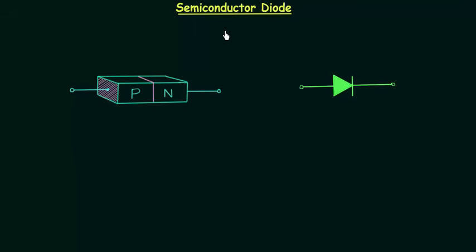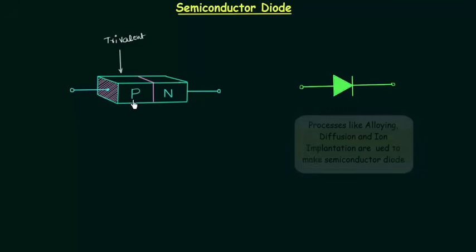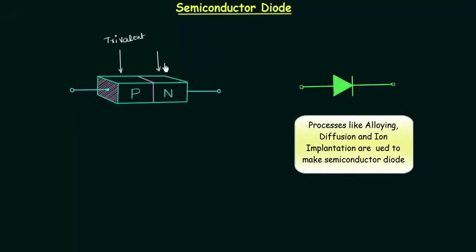A PN junction with two metallic contacts is known as a PN junction diode or semiconductor diode. A semiconductor diode is formed when trivalent impurities are introduced on one side and pentavalent impurities are introduced on the other side of a single silicon or germanium wafer. For example, if we introduce trivalent impurities on one side we get P-type material, and if we introduce pentavalent impurities on the other side we get N-type material, with metallic contacts forming the semiconductor diode.